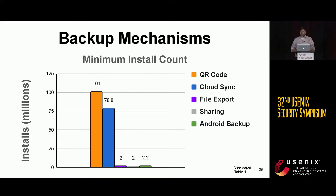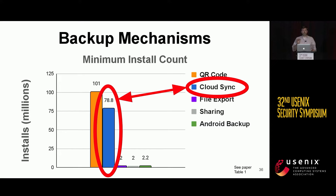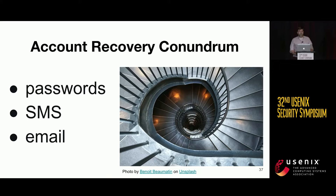This graph shows the number of installs impacted by each backup mechanism. The orange bar for QR codes is by far the most, at 101 million installs minimum — but this is drastically skewed by Google Authenticator, which at the time had 100 million installs and intentionally didn't support any backup mechanism other than QR codes. In this talk, I'll focus mostly on our findings related to apps that supported cloud backups, which impacted almost 80 million installs. Though TOTP two-factor is often promoted as more secure than SMS two-factor, we found that cloud-based storage mechanisms ended up placing trust in the same technologies TOTP was meant to supersede: passwords, SMS, and email.